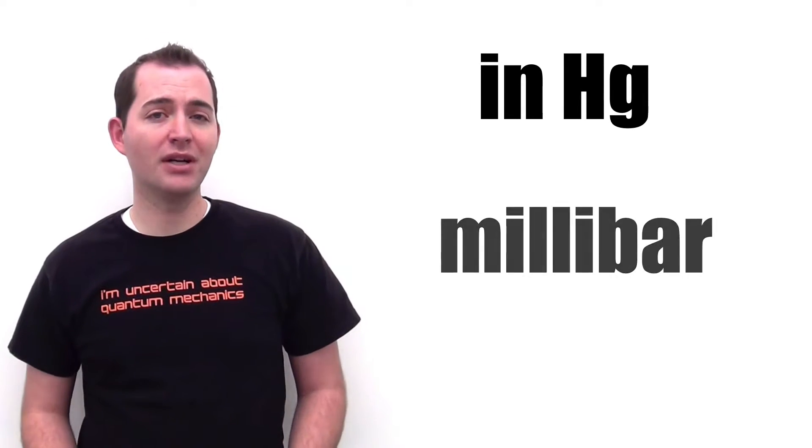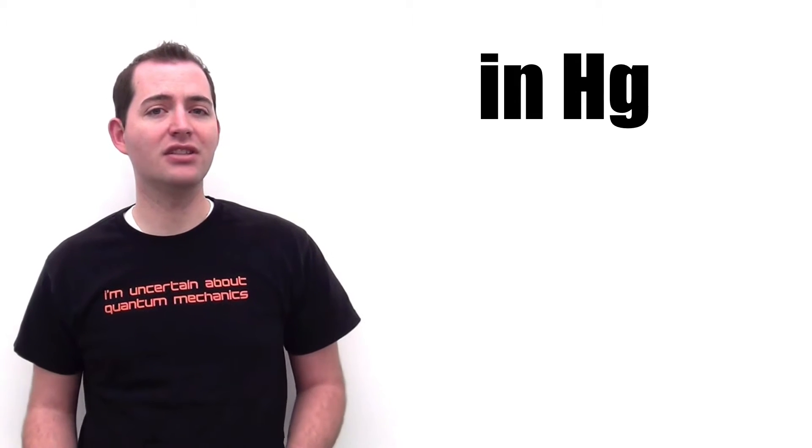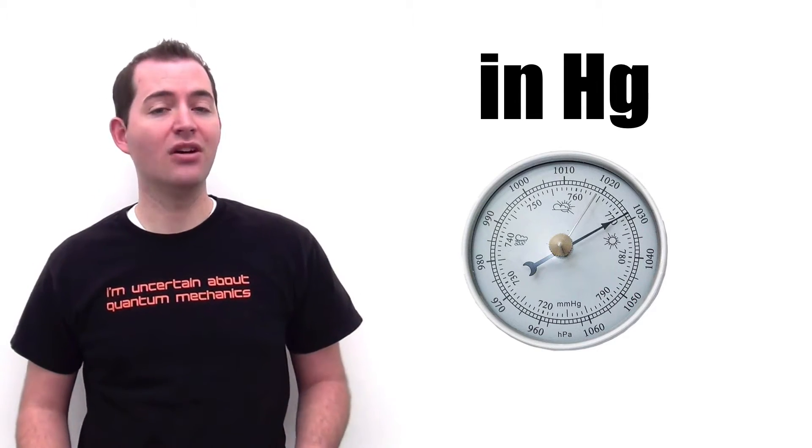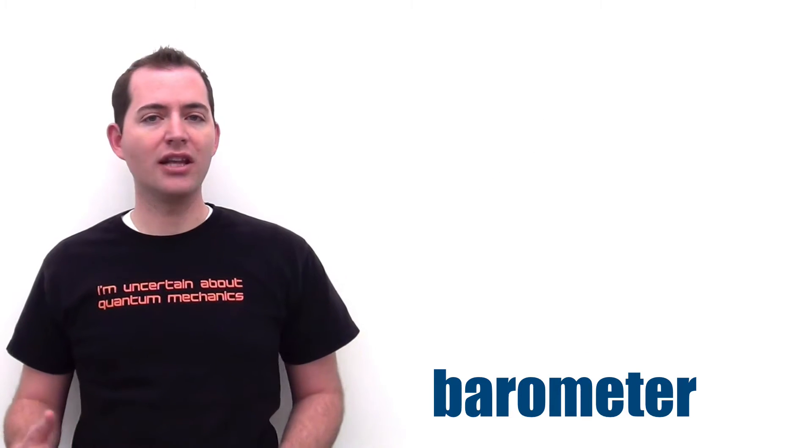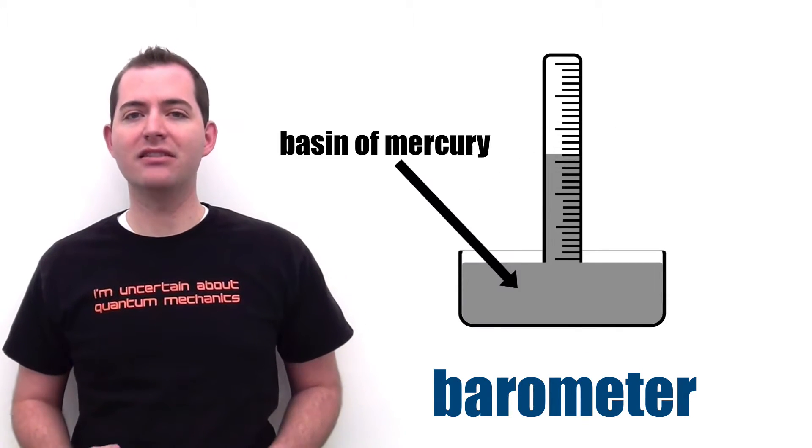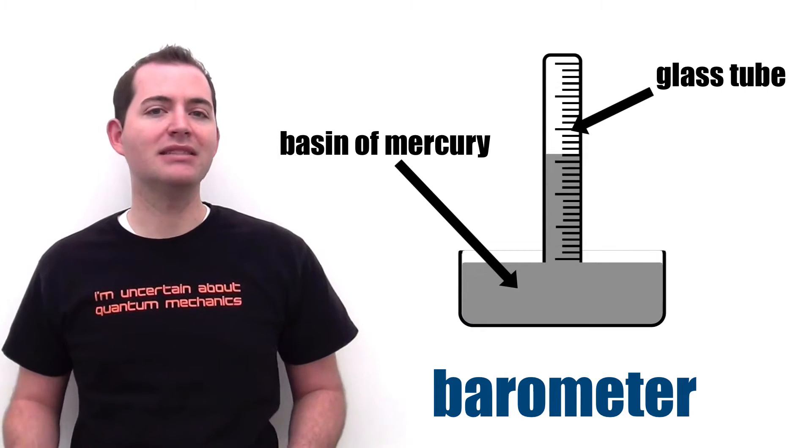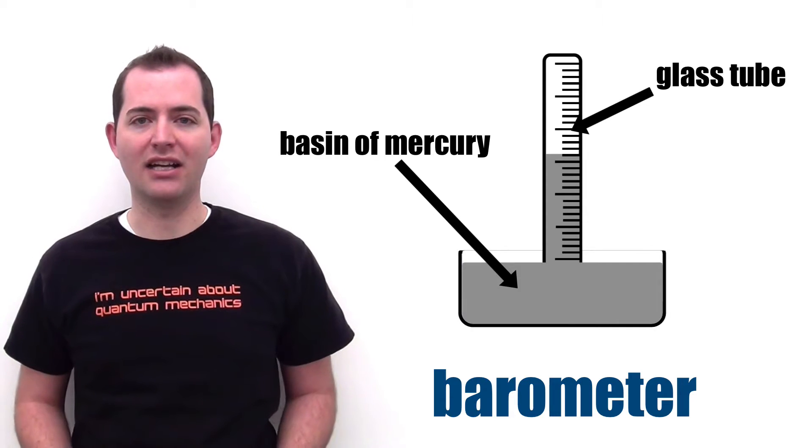The units of inches of mercury comes from the invention of a device used to measure air pressure, which is known as a barometer. Early barometers used a basin of mercury and a glass tube that the mercury would move through based upon the air pressure in an area.